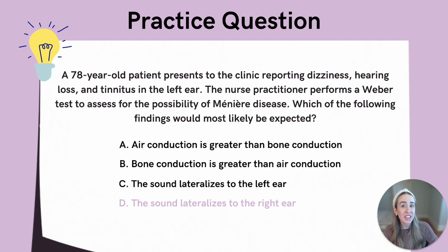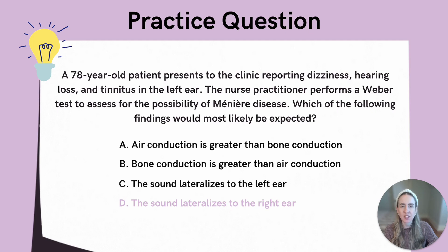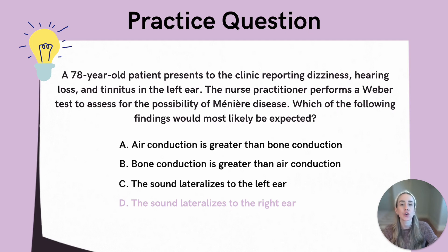So if you were thinking D — the sound lateralizes to the right ear — you would be correct. In Meniere disease, the hearing loss is sensorineural, meaning there is damage to the inner ear. During the Weber test, the sound will lateralize to the unaffected, or the good ear, in cases of sensorineural hearing loss, which is going to be the right ear in this scenario.